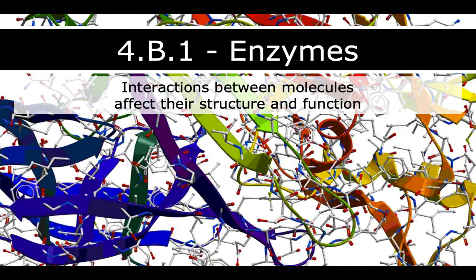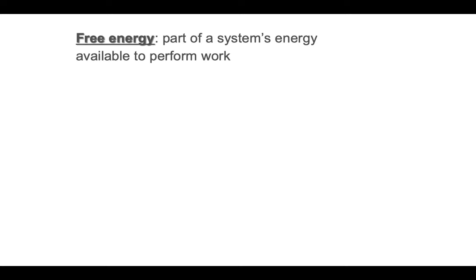Today we're going to be talking about enzymes, and in order to talk about enzymes, we really have to take a quick look back on energy. Your book talks about some different terminology that I just want to give a little primer on. So it talks about free energy — that kind of sounds like an oxymoron — but free energy is basically part of a system's energy that is available to actually do something, to perform some kind of work. Now if you have delta G, remember that delta means change, so delta G is your change in free energy. Therefore G is your free energy.